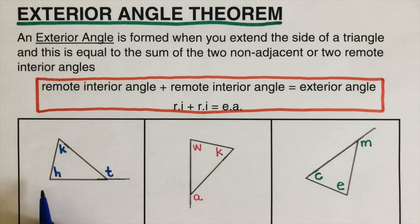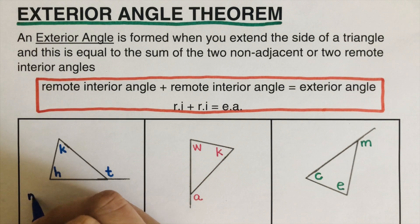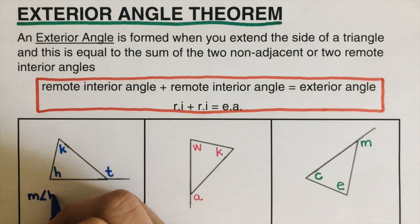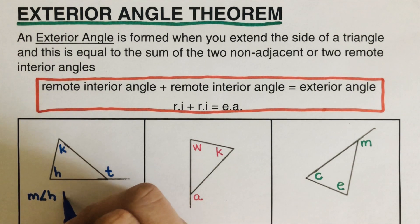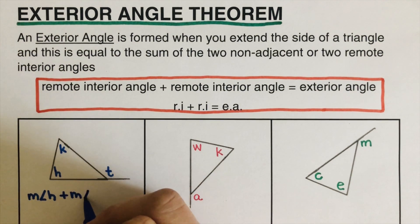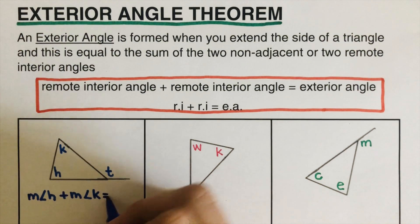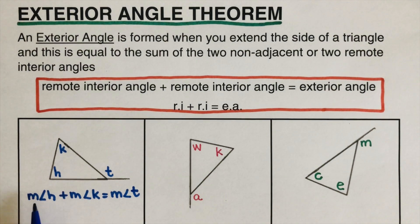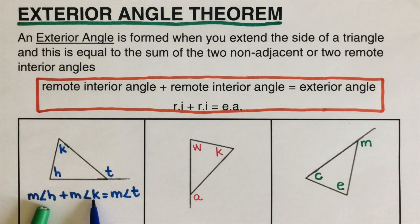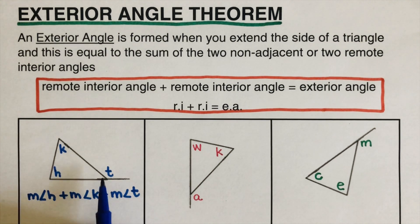So I can write an equation for these two remote interior angles. The measure of angle H plus the measure of angle K is equal to the measure of angle T. The two remote interior angles sum to the exterior angle, which is letter T.